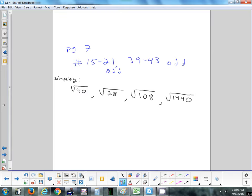First homework tonight will be in the book on page seven. I'd like you to try 15 to 21, just the odds, and 39 to 43, just the odds. First part is distance, second part is midpoint. And copy down these four problems that say simplify: √40, √28, √108, and √1440. I'll take a look at that first thing tomorrow, and then we'll start our last section for this week, which is section 2.1.